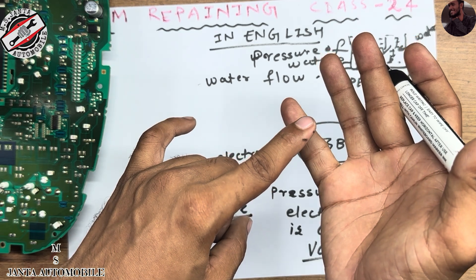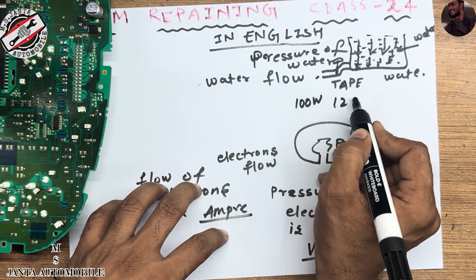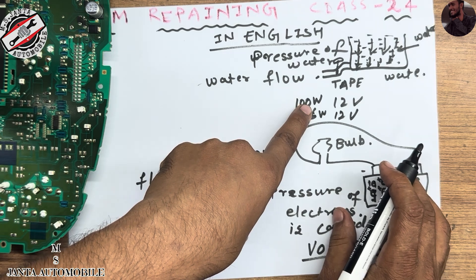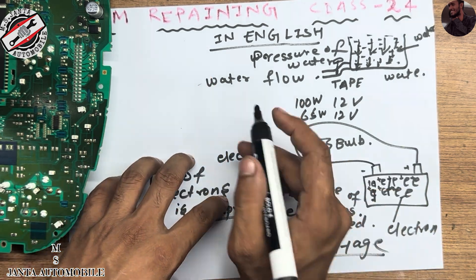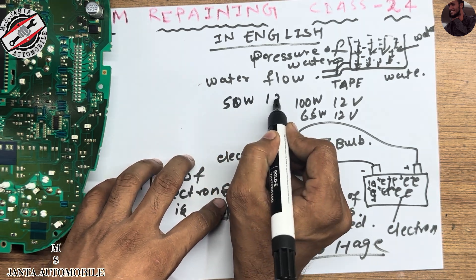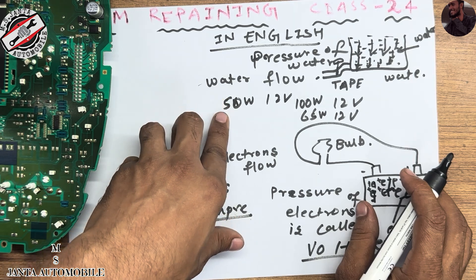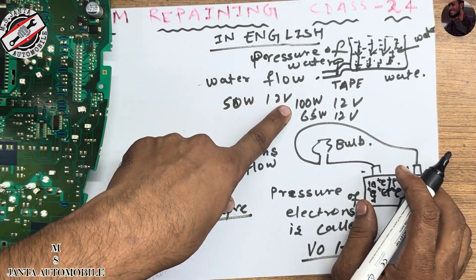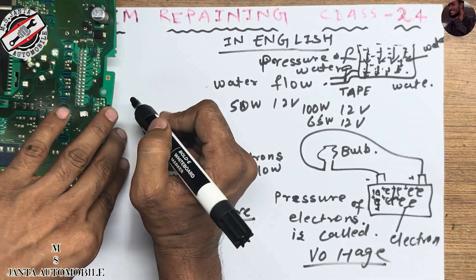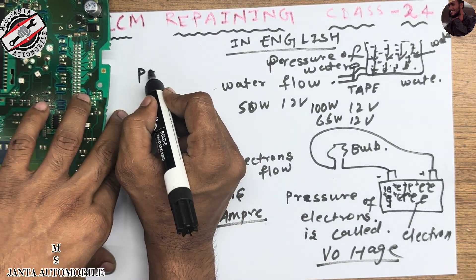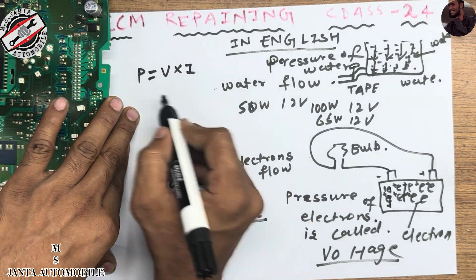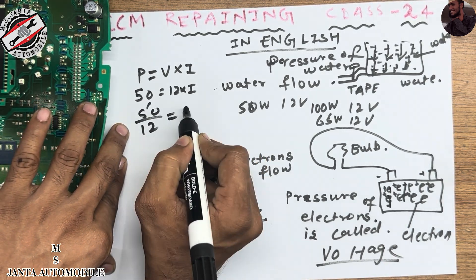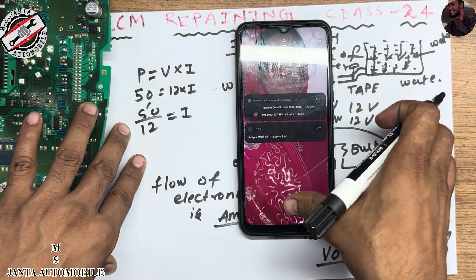As you can see everywhere — 100W 12V, 65W 12V — for example a headlight or fog lamp: 50W, 12V. You can apply P = V × I. So power is 50W, voltage is 12V, and you have to find current I. So 50 divided by 12 equals I — you can very easily find the current.